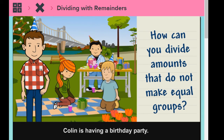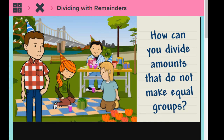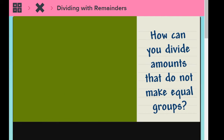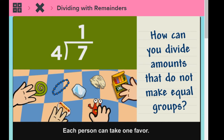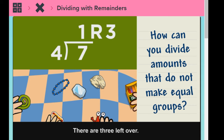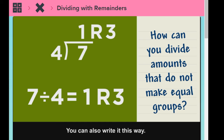There are seven party favors and four people. How many favors does each person get? How many are left over? To find out, divide seven by four. Each person can take one favor. There are three left over. You can also write it this way.